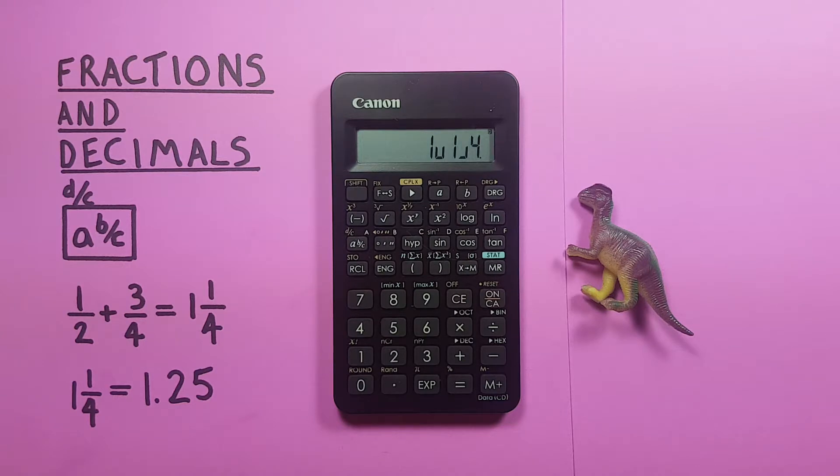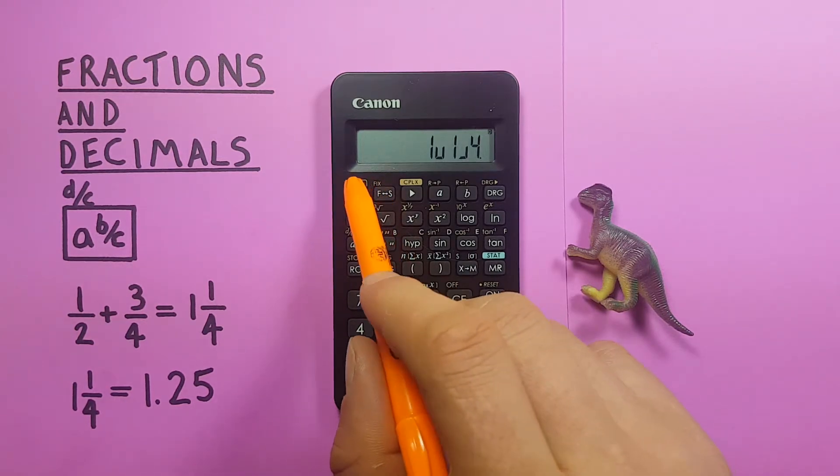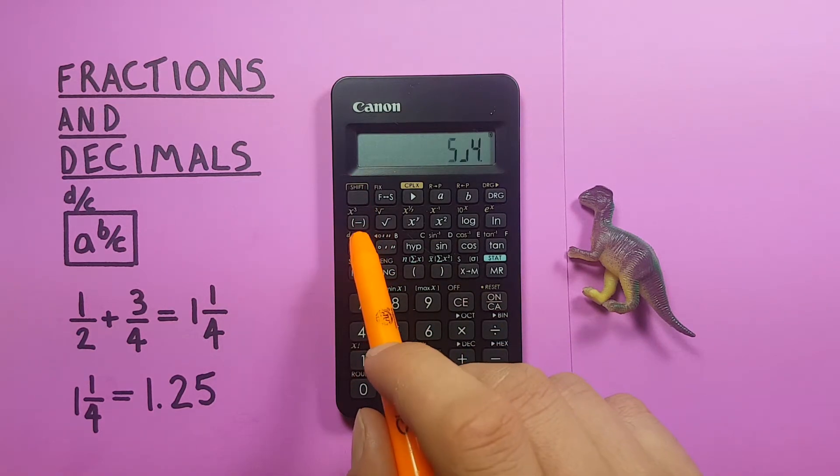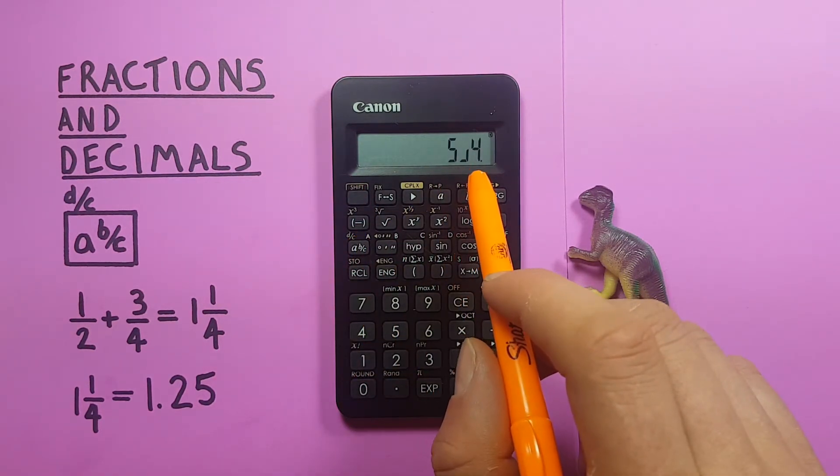We can also convert this to an improper fraction by using the shift function of the a b over c key, which gives us 5 fourths.